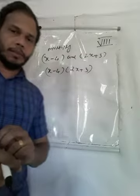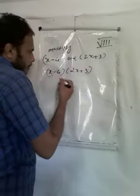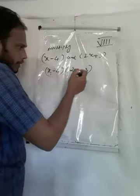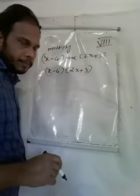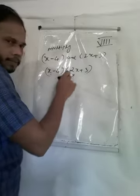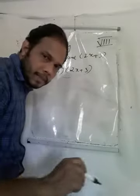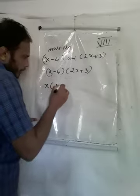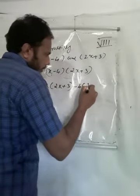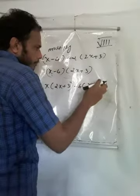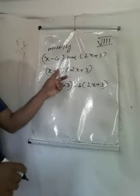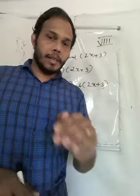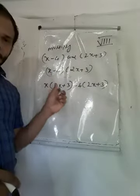So this is the multiplication of a binomial by a binomial. We can multiply each term: x into (2x plus 3), and then minus 4 into (2x plus 3). Each term needs to be multiplied with every term in the other expression.